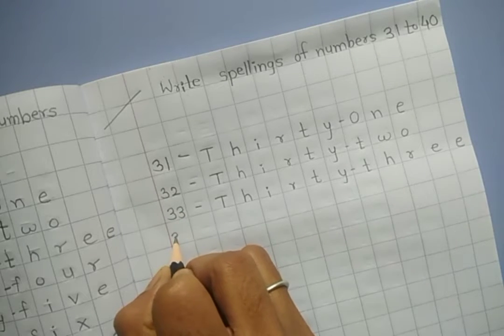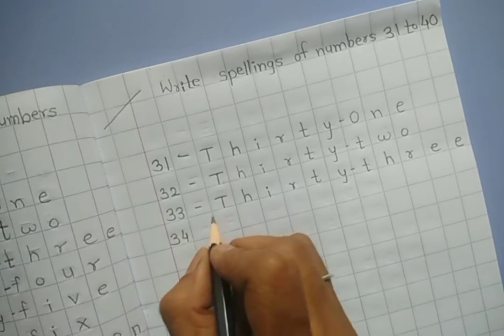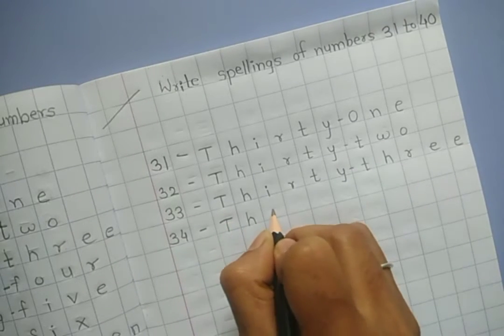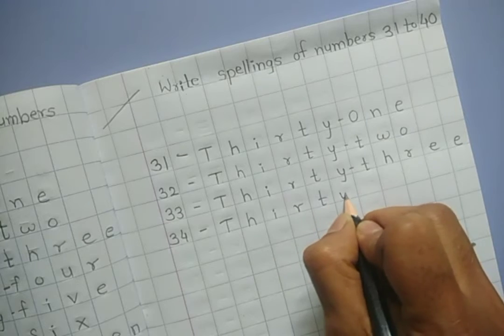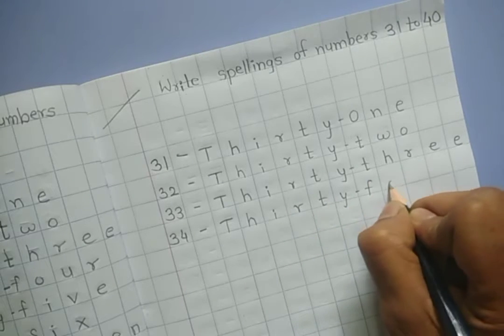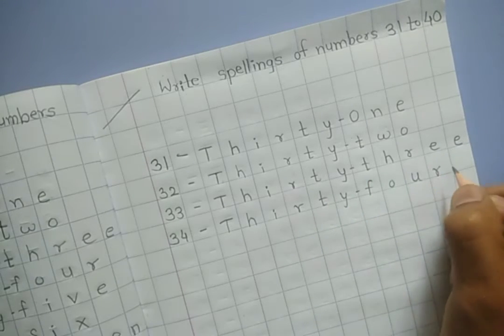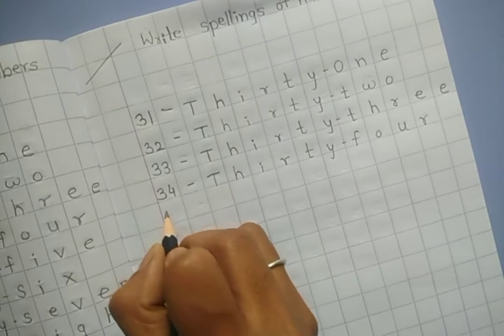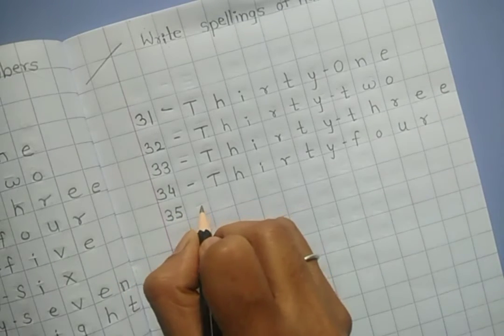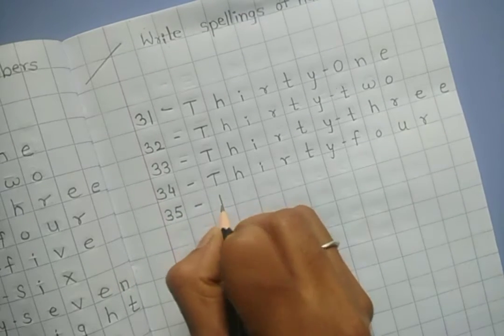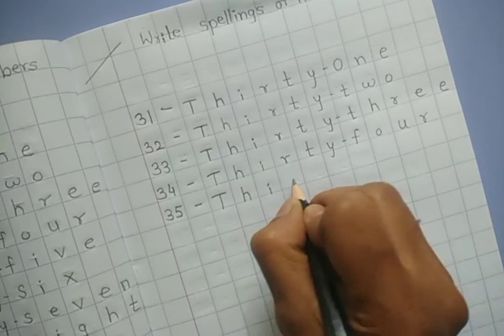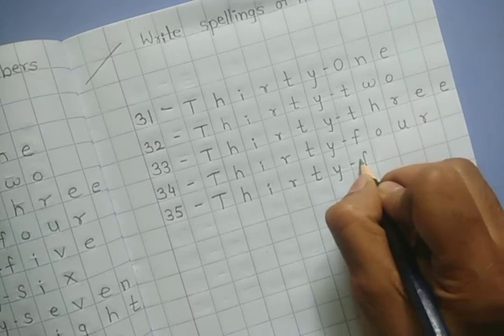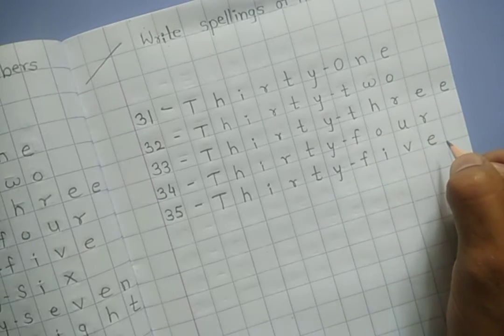Next number is 34, T-H-I-R-T-Y-F-O-U-R, thirty-four. Next number is 35, T-H-I-R-T-Y-F-I-V-E, thirty-five.